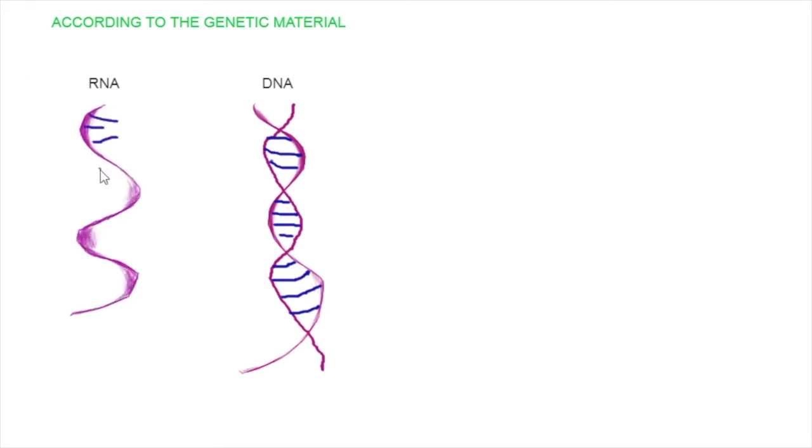According to the genetic material that they have inside, we have two options. Either they have DNA, that we have already seen, and it's a form of two branches of information, or they have a simpler version called RNA that is only one of the branches.